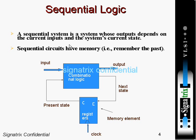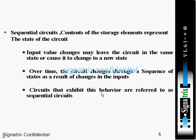A sequential system is a system whose output depends on the current input and the system's current state. Sequential circuits have memory — they remember the past. When you are evaluating the output, the next state is also getting evaluated and stored in the register. The contents of the storage element represent the state of the circuit.